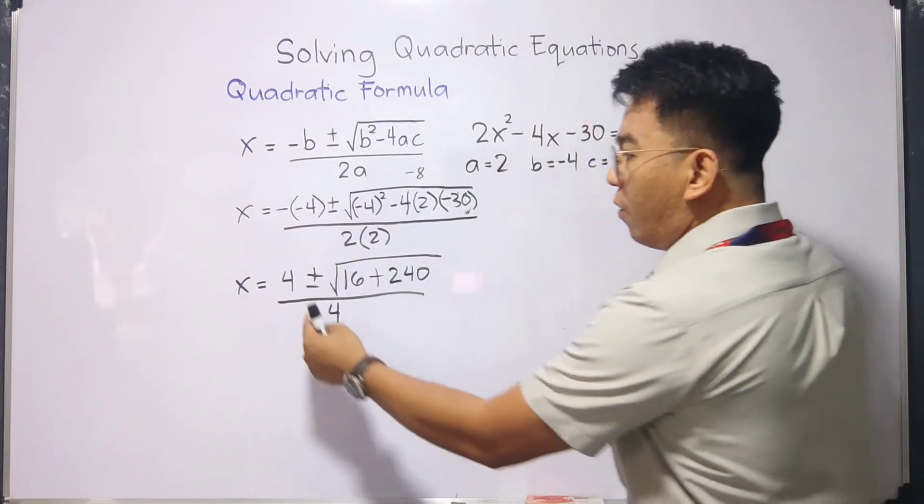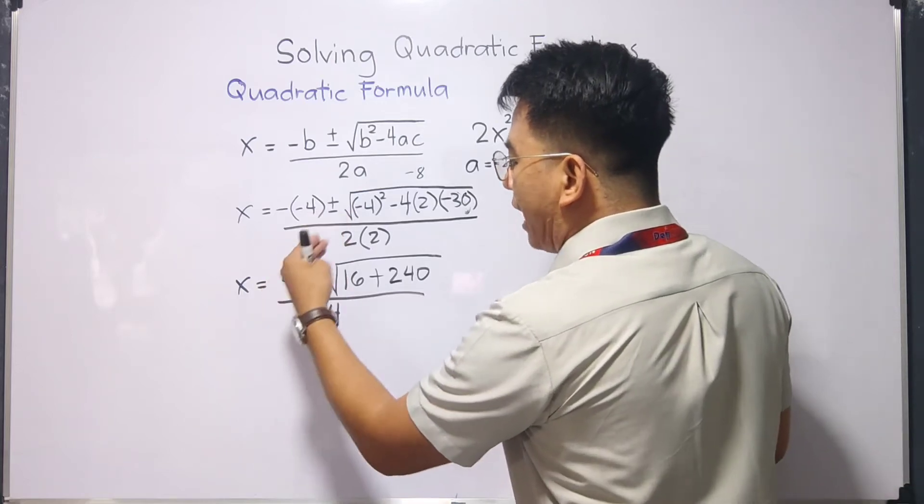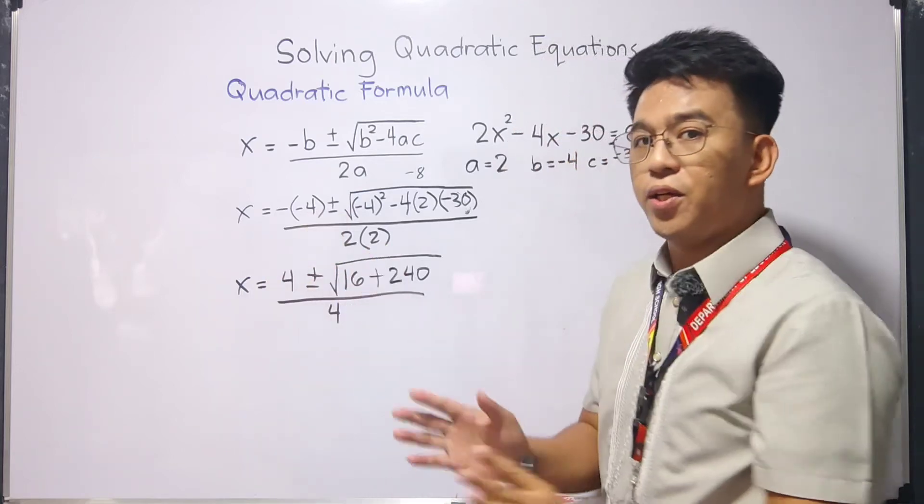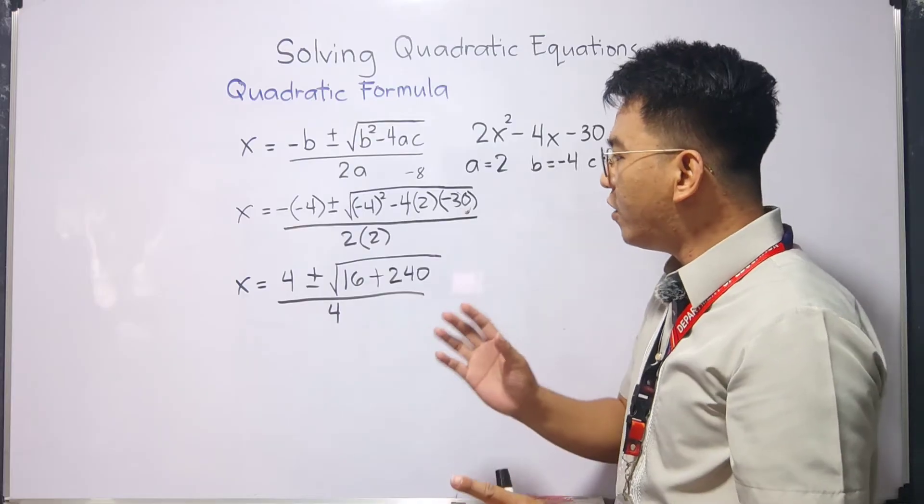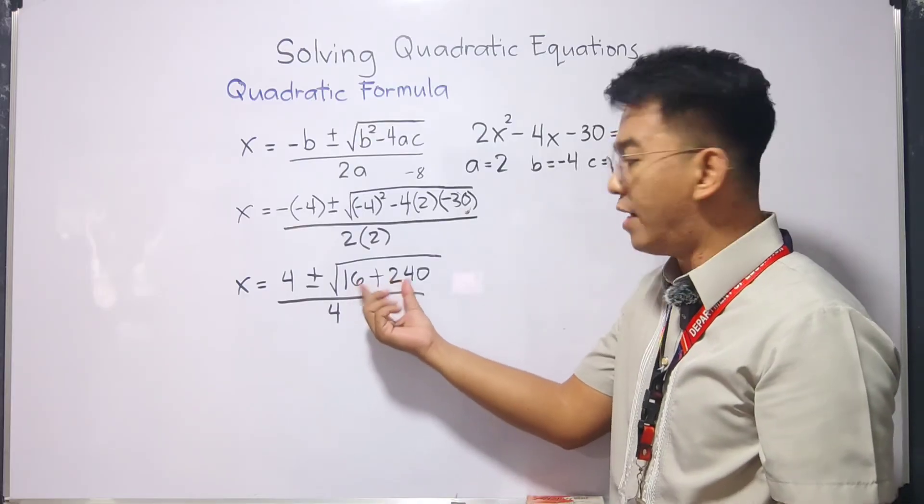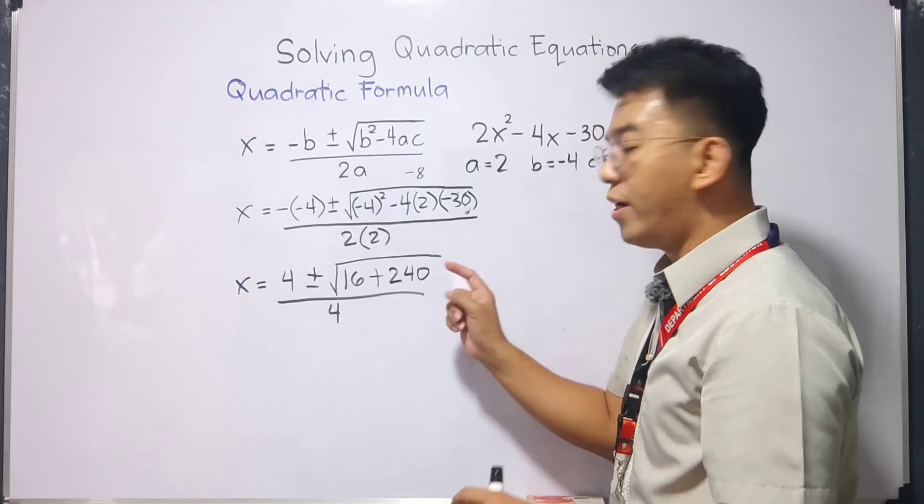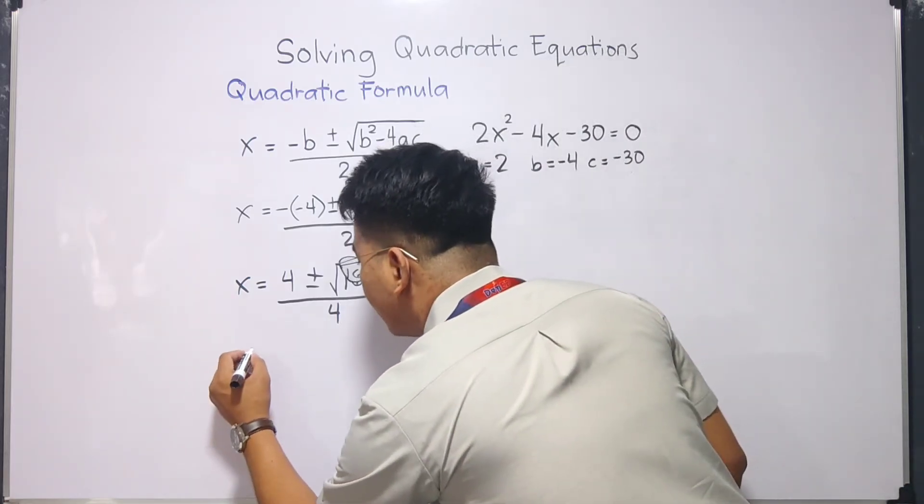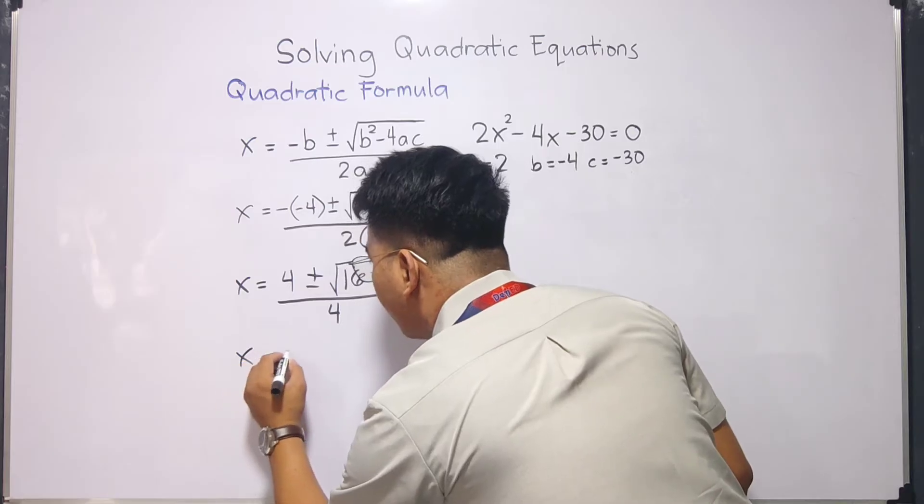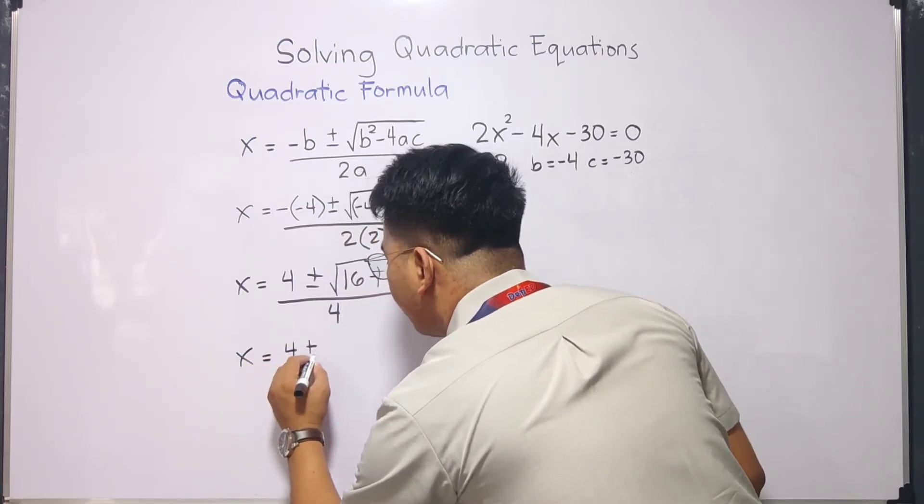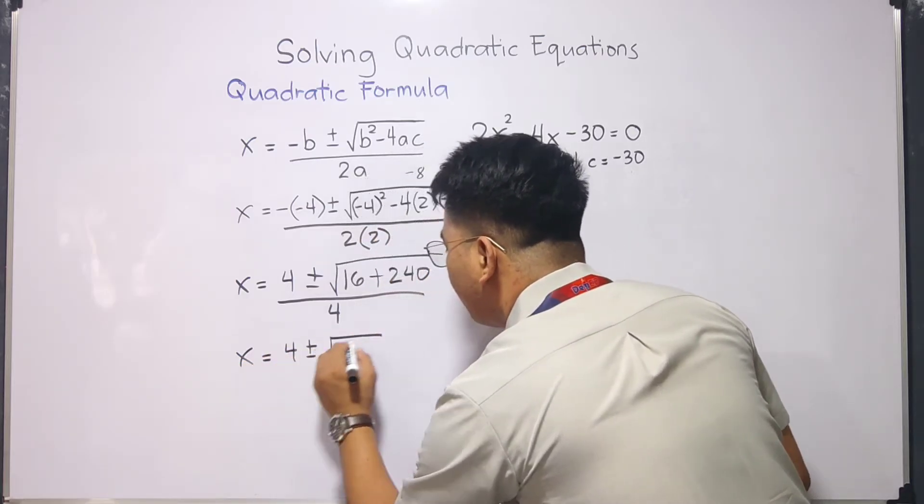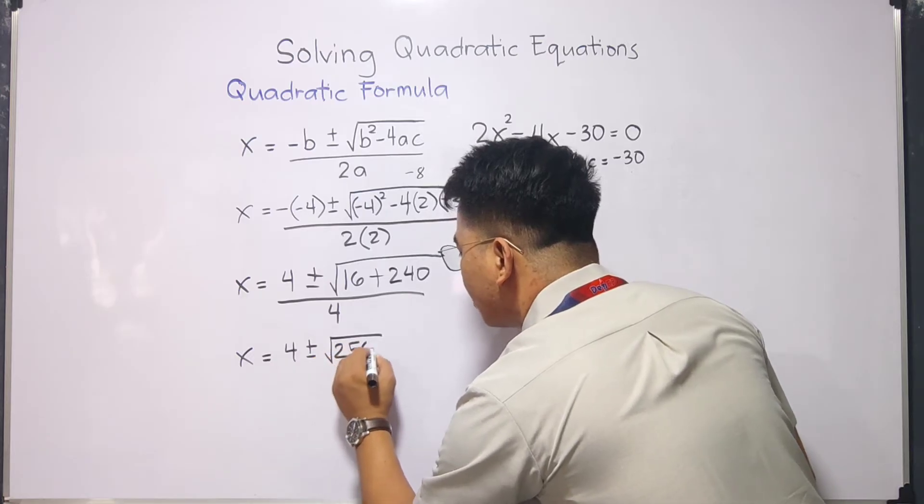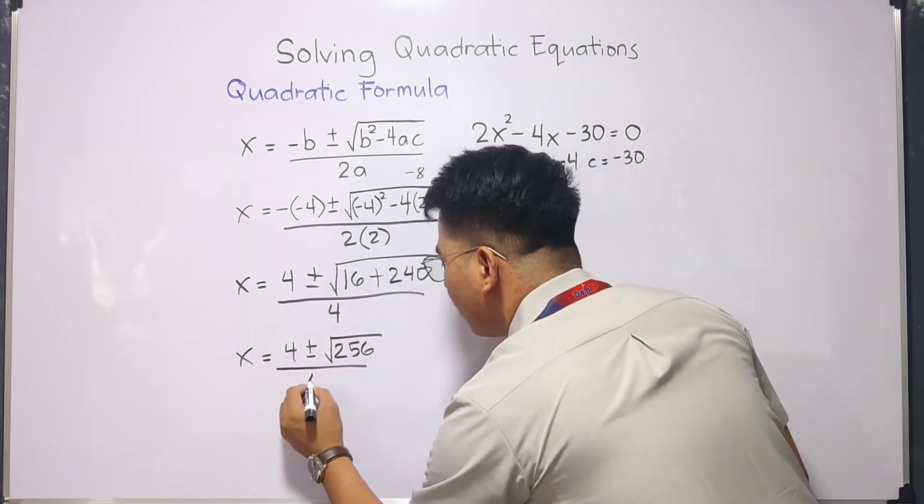If you make a mistake here, we cannot cancel out 4. That's not allowed. What we need to do next is, we need to simplify this radical. 16 plus 240, that is 256. So what we have now is, x is equal to 4 positive negative square root of 256 over 4.